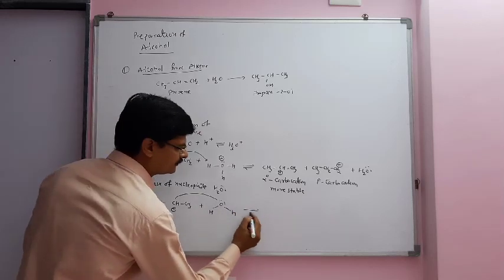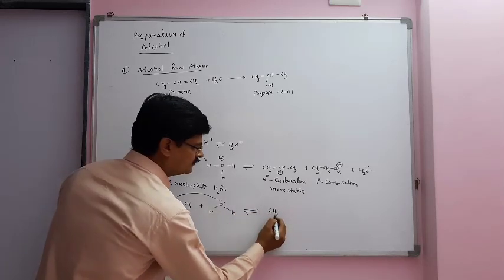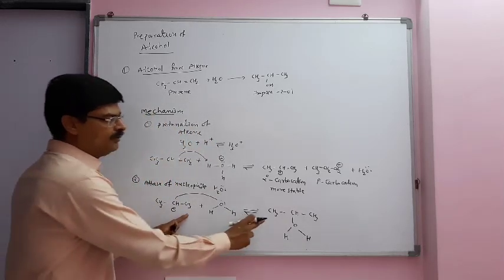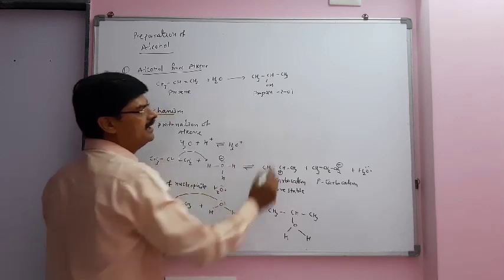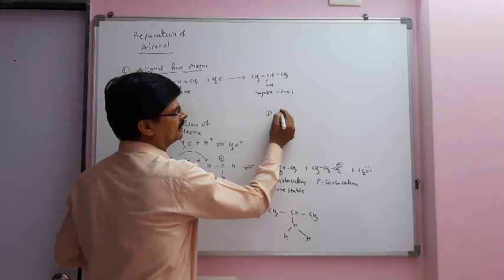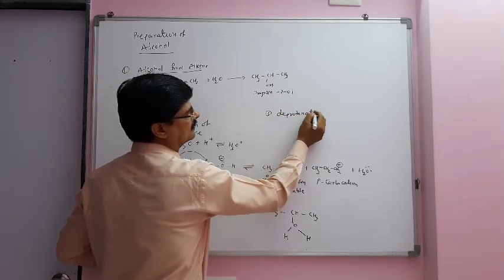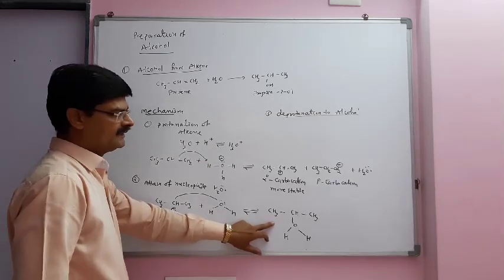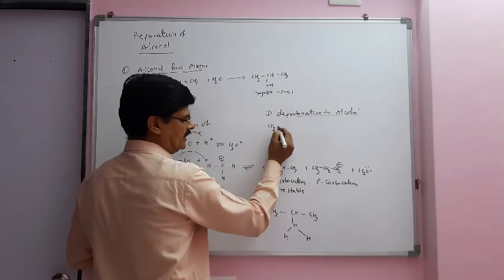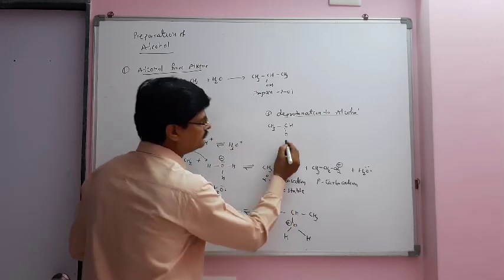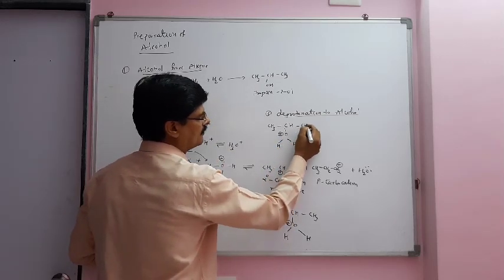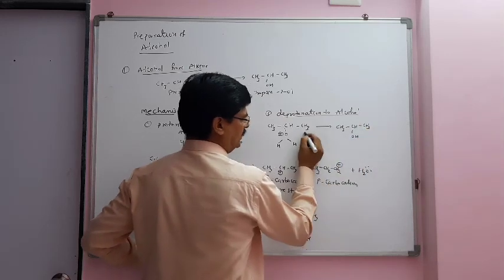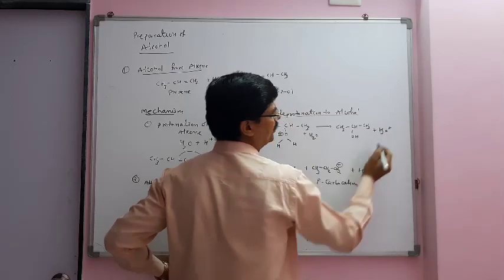Because of this attack, the product we obtain leads to an intermediate. From this intermediate, as the next step follows, deprotonation takes place. In the third step, deprotonation takes place to form alcohol. When deprotonation takes place from the intermediate compound CH3-CH(OH)-CH3, we get the product alcohol, and H3O+ is released.